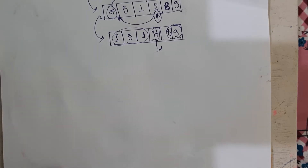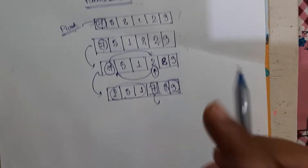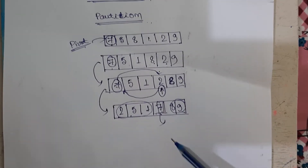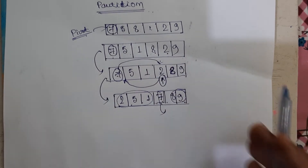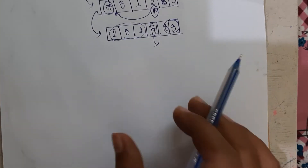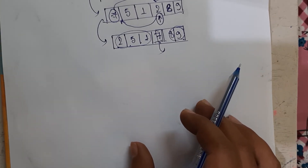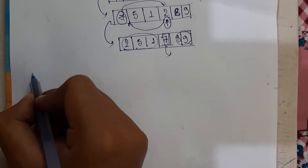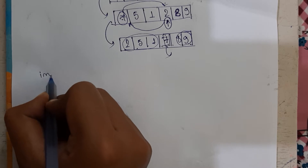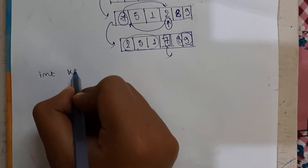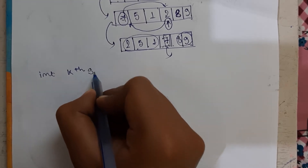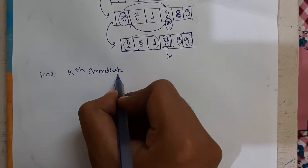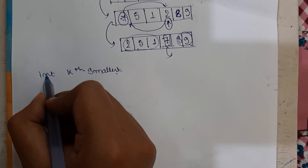Now let us write the algorithm and see how it works for finding the kth smallest element. While writing the algorithm I will explain in detail so that it will be easy for you. This is the function name and this is the type of variable which I am returning.